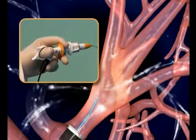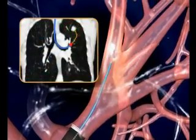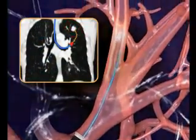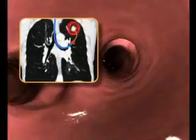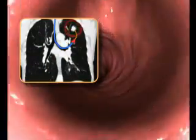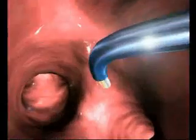The location and steering directions are performed according to the sensor's position on the CT roadmap relative to the target, which was previously registered to the patient's lung.